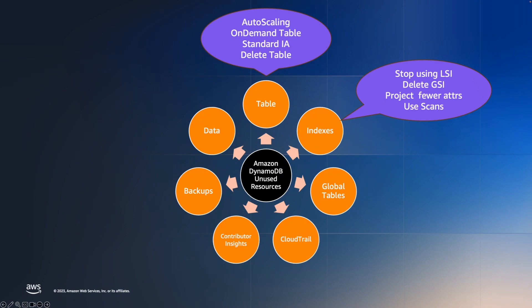Now, if you see any GSI is going unused, there are a few options you can leverage. You can either get rid of the GSI by deleting it — that's the first option. Or you can avoid projecting all the table attributes to the GSI, which will save you on WCUs and on storage cost. This is done on the index configuration side. Additionally, if the GSI usage is infrequent, you can validate if scanning the base table is more cost-efficient than maintaining an idle GSI that you are only using a few times during the entire month. There is a nugget on this topic titled GSI versus Scan, and you will find the link under the captions.